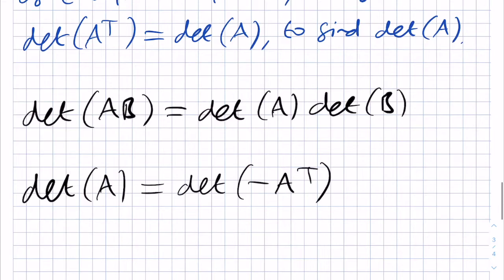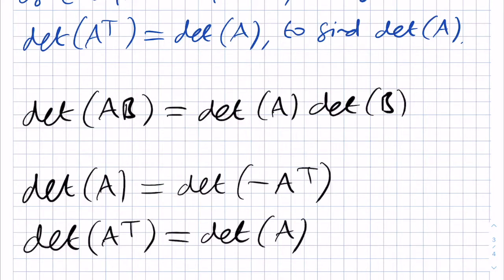At this point, we want to use that det of A transpose is always equal to det of A. However, we should be careful because of the minus sign that we have. So we need to split up our det of minus A transpose using the product of determinants result.